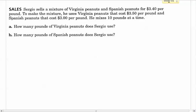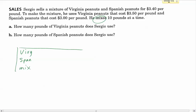So here we go. We're going to do sales. Now, this one doesn't have a table. So I'm going to go ahead and make a table. So let's figure out what we've got here. We've got two different things. We've got Virginia peanuts and we've got Spanish peanuts. Okay, and we're going to put them together to get a mixture.